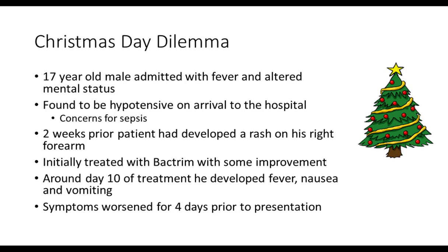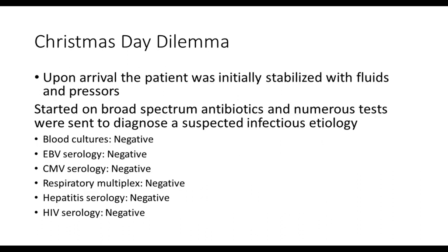We were feeling a little down on ourselves until we had this case on Christmas Day. This was a 17-year-old male admitted with fever and altered mental status. He was found to be hypotensive on arrival to the hospital with concerns for sepsis — he was quite sick. Two weeks prior, the patient had developed a rash on his right forearm. He was initially treated with Bactrim with only mild improvement. Around day 10 of treatment he developed fever, nausea, and vomiting. These symptoms worsened for four days prior to presentation. He was initially stabilized with fluids, pressors, and broad-spectrum antibiotics. Numerous tests were sent to diagnose a suspected infectious etiology.